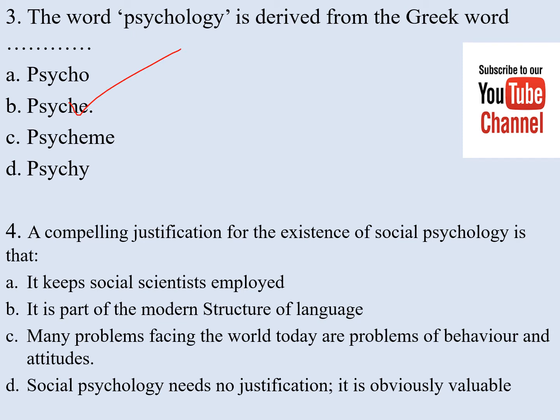Number four. The compelling justification for the existence of social psychology is that: a) it keeps social scientists employed, b) it is part of the modern structure of language, c) many problems facing the world today are problems of behavior and attitudes, d) social psychology needs no justification — it is obviously valuable. The correct answer is c.